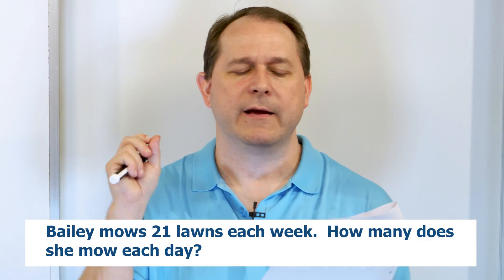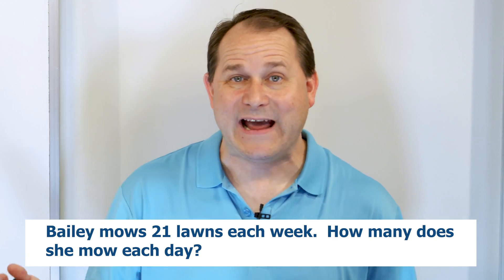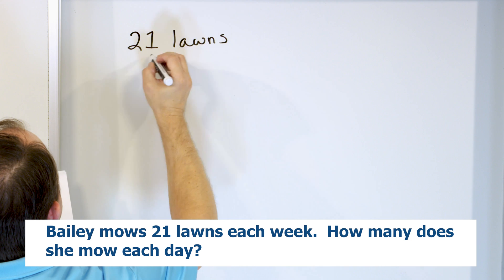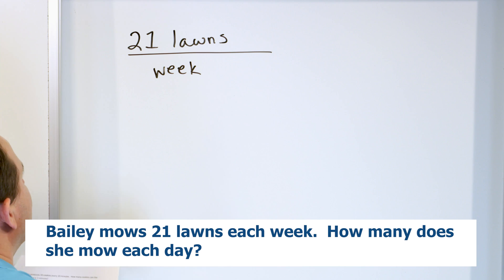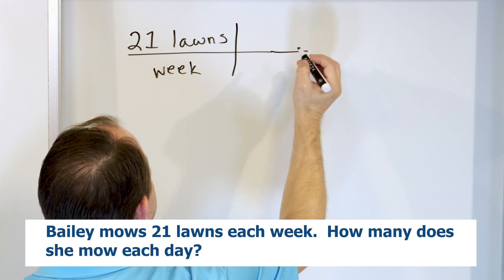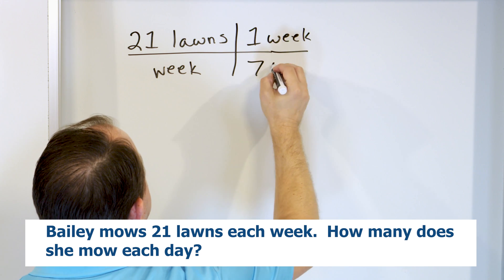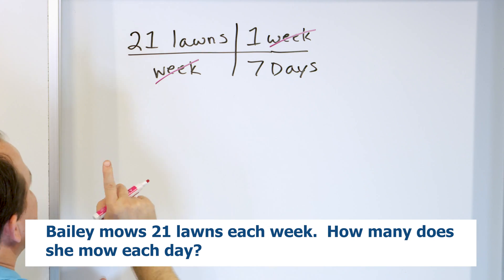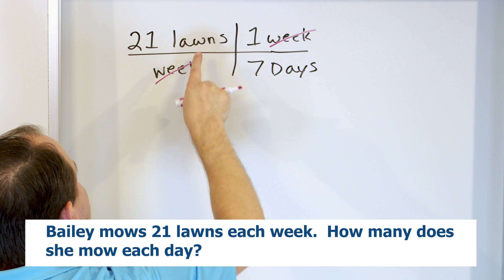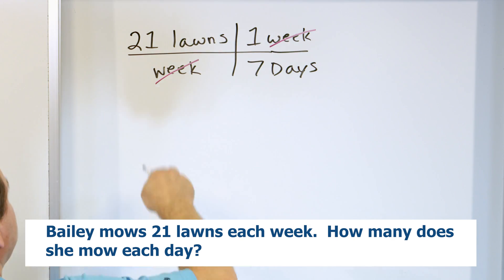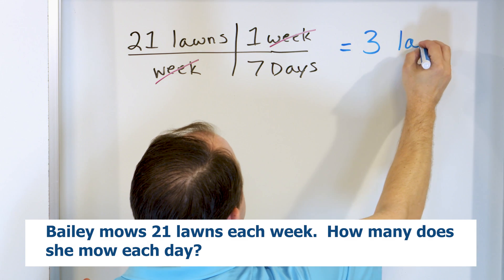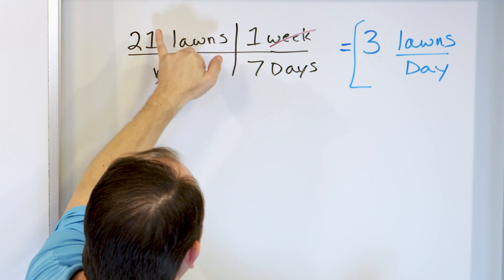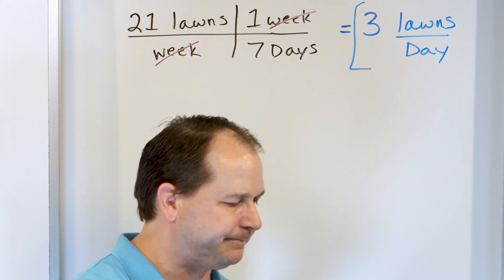Bailey mows 21 lawns each week. How many does she mow per day? Or how many does she mow in a day? Well, it's presented to us as 21 lawns in a week. But we don't want to know per week. We want to know per day. So we kind of have to convert weeks into days. And we know that one week is seven days. And the reason we're writing it like this, instead of flipping it upside down, is because this way, weeks cancels with weeks. So what it's telling us is just take the 21 and divide by seven, and the units you'll have left will be lawns per day. And that's what the problem is asking us. So what is 21 divided by seven? 21 divided by seven is three. And so it's lawns per day. So this is a unit rate. This is how many he's producing per day. So we kind of had to do a little unit conversion there. But ultimately, when we do this division, lawns per day, that's the unit rate that we're seeking.